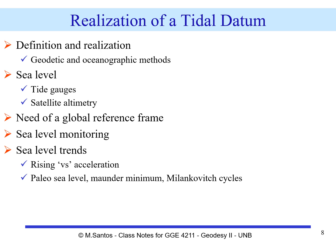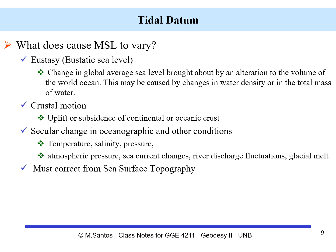For example, we have the Maunder Minimum, which is a minimum in the solar cycle associated with the little ice age that took place around the 1700s. We also have the Milankovitch cycles, which are the big regulators of the ice ages. Mean sea levels vary — but what causes them to vary? That is what is known as eustasy, or the eustatic sea level, which is the change in global average sea level caused by an alteration of the volume of the world ocean.